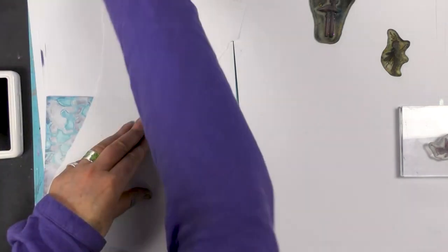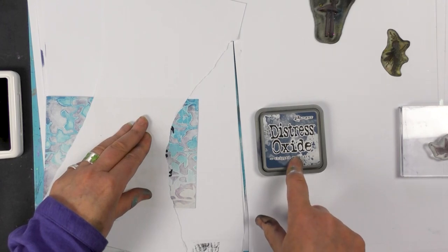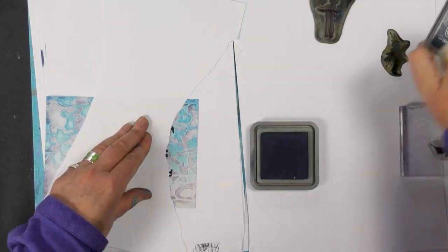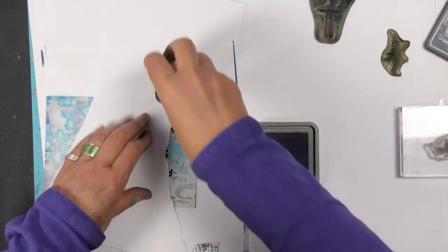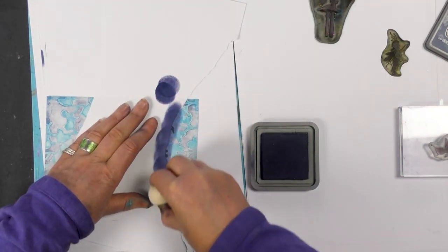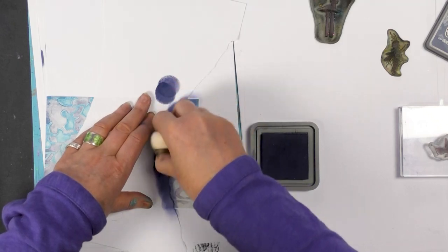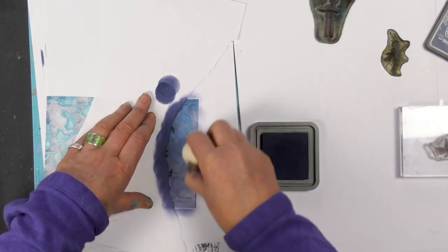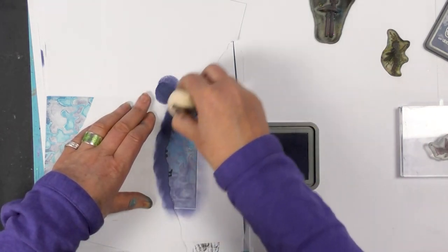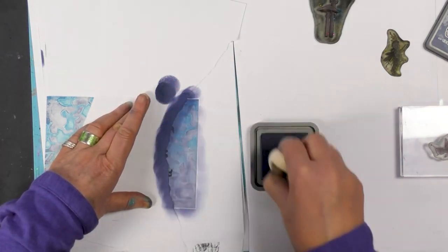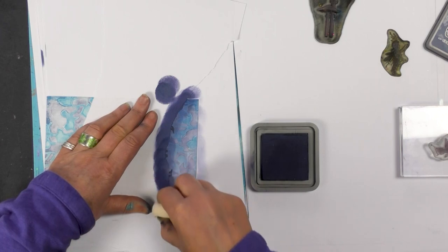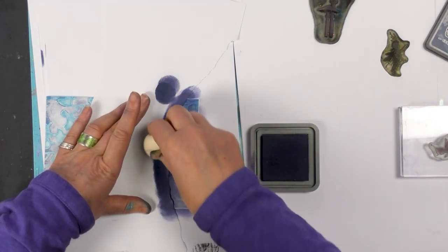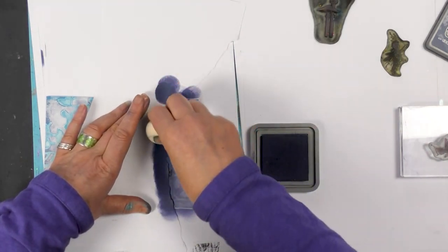So color-wise, let's go with the Chipped Sapphire. This is the Distress Oxide, so the Oxides go really well over the top of the acrylic paints. So I'm just going to smooth that in. You can get quite a solid color with this. So I'm just making it a little bit more dense across the top.